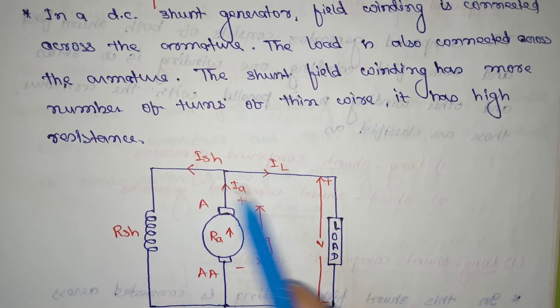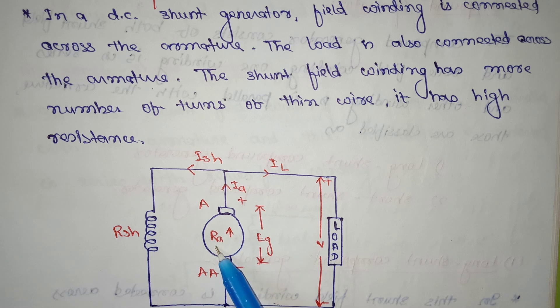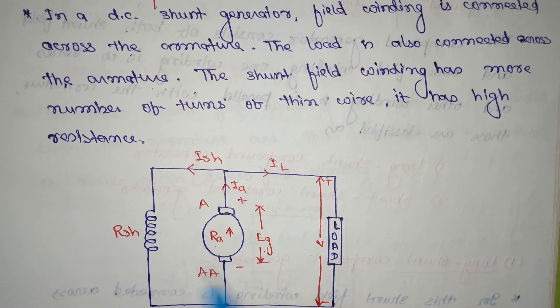Here, Ish is the shunt current, Il is the load current, Ia is the armature current, Ra is the armature resistance, Eg is the generated EMF, and Rsh is the shunt resistance.